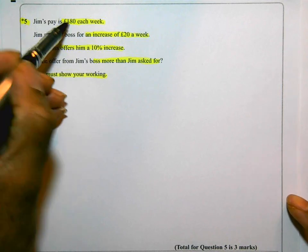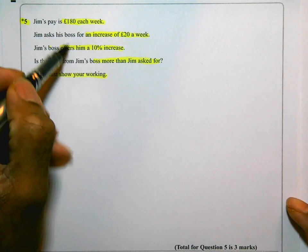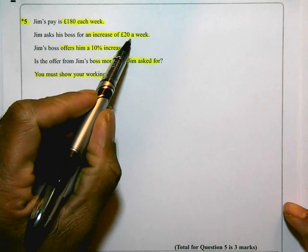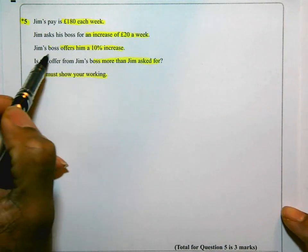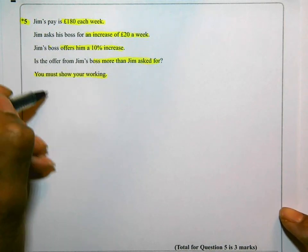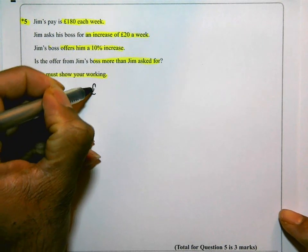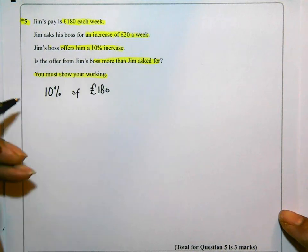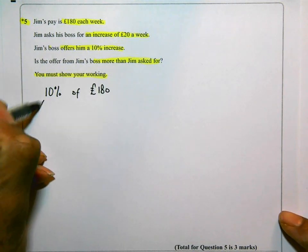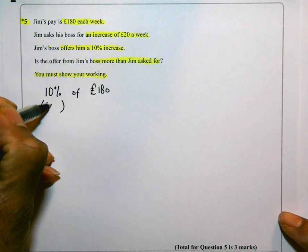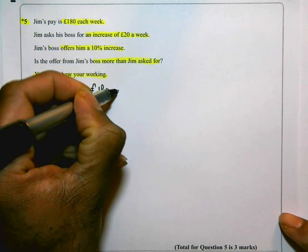So if his pay is £180 and he asks for £20 increase, the boss offers him 10%. So I'm going to find 10% of £180. If I find 10% of anything, I divide by 10. So £18.